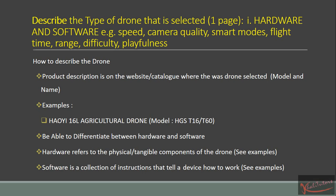For my portfolio, I've chosen the 16-liter agricultural drone, and the model is a HGST-16. You don't have to worry too much about the model. But the most important thing you need to do in this question is differentiate between hardware and software. By hardware, we refer to the physical or tangible components of the drone. Software is a collection of instructions that tell a device how to work.